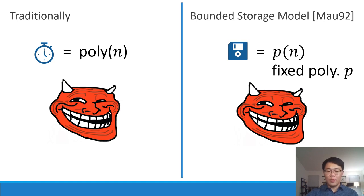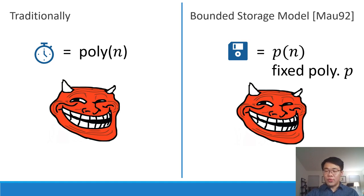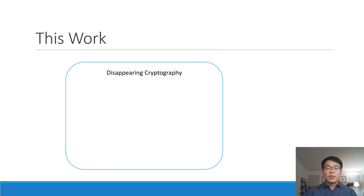How does this help us construct disappearing cryptography? In the case of disappearing ciphertext, the ciphertext being transmitted is so large that it exceeds the adversary's storage bound. Then for a space-bounded adversary, the ciphertext cannot be written down and just effectively disappears after the transmission. In our work, we initiate the study of disappearing cryptography in the bounded storage model.